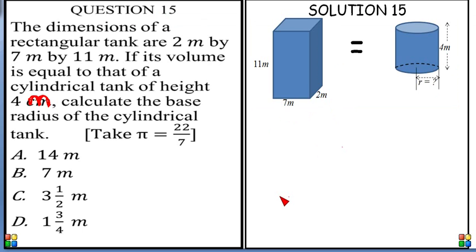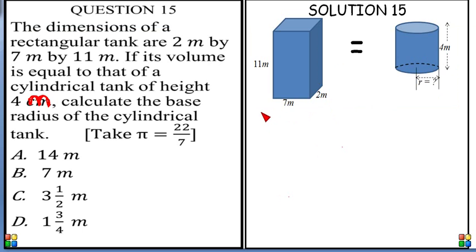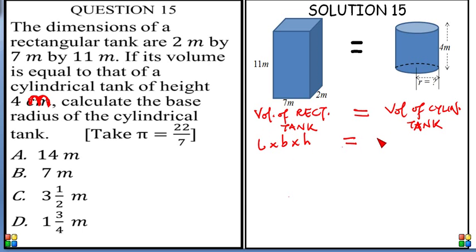So we are going to equate their volumes. Now this is like a cuboid, this is like a cylinder. And we know the formula for this rectangular tank now. The volume of a rectangular tank is equal to the volume, as we are told, volume of a cylindrical tank. The formula for a rectangular tank is length times breadth times height. The formula for the volume of a cylindrical tank is pi r squared h.